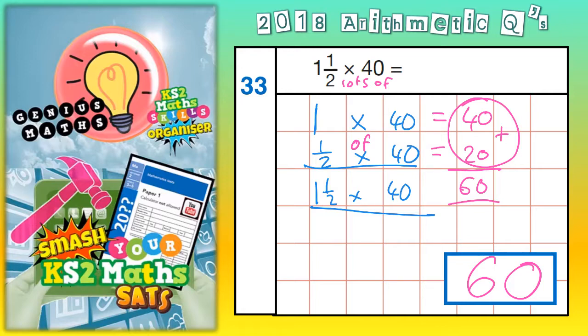1 lot of 40 is 40. ½ lot of 40 is 20. 1½ lots of 40 is 40 plus 20, which is 60. Final answer, 60.